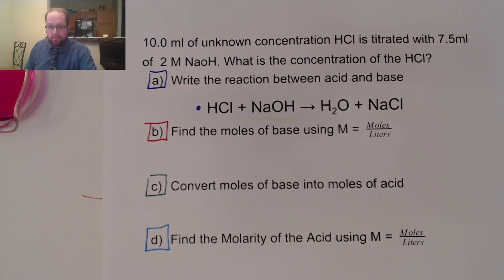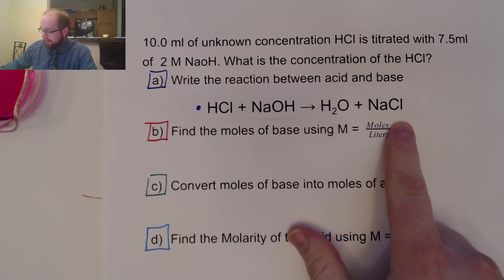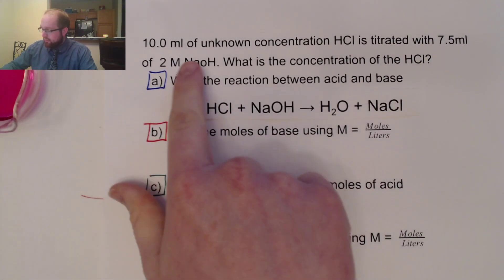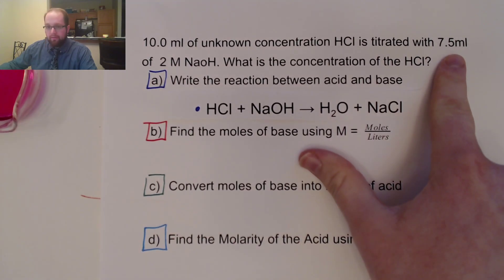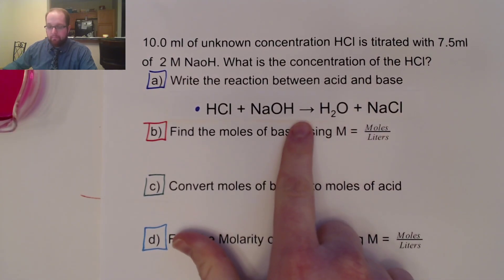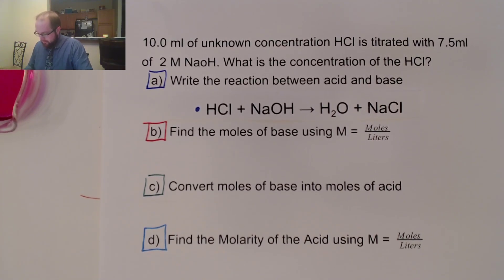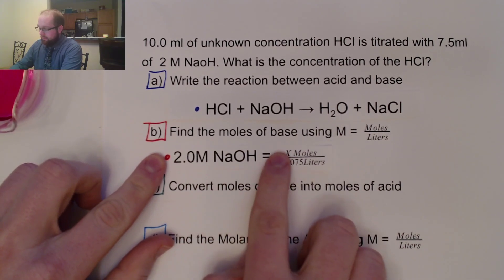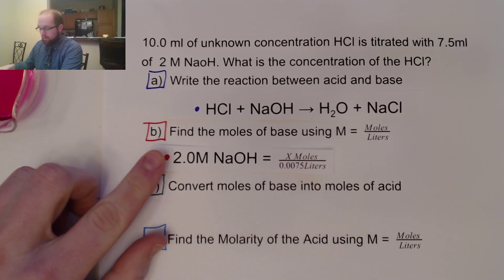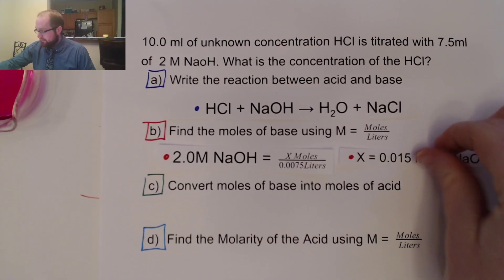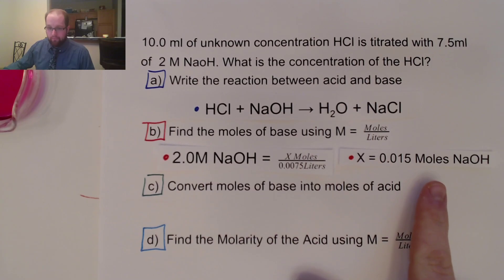HCl plus NaOH is going to make water and our salt, which in this case is literally table salt. Now I have my reaction written. What I need to do is use what I know — we know the concentration and we know the volume of our NaOH. Using that, I can find my moles of NaOH. We know that 2 molar NaOH equals X moles of NaOH over 0.0075 liters. Make sure you convert that to liters. You multiply out 0.0075 and you get 0.015 moles of NaOH.